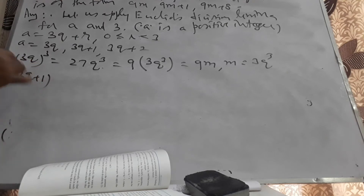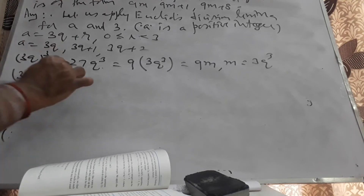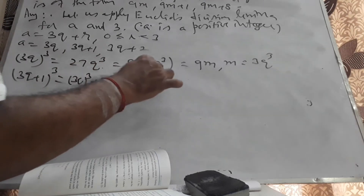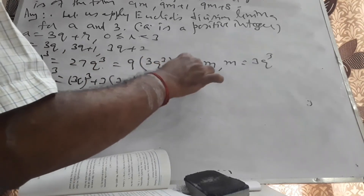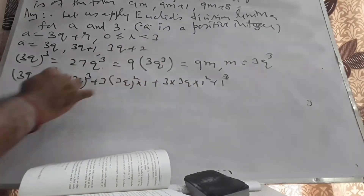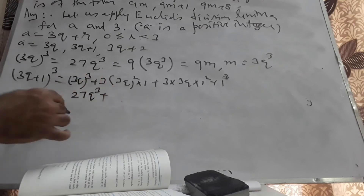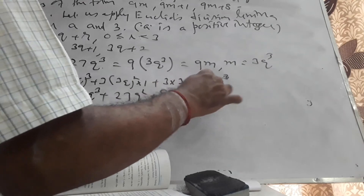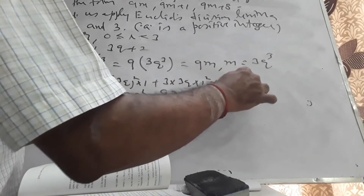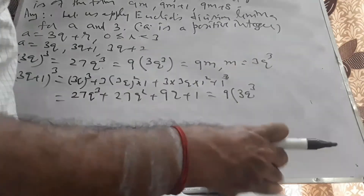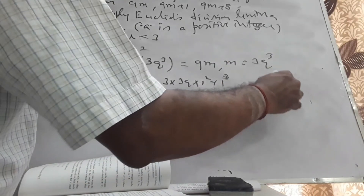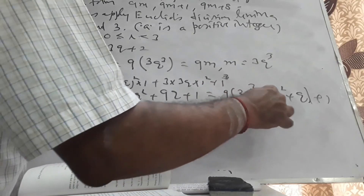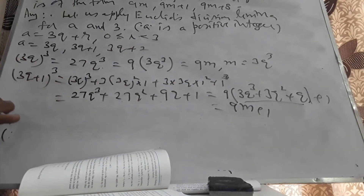(3Q+1)³: apply (a+b)³ expansion — equals 27Q³ + 3×(9Q²)×1 + 3×(3Q)×1² + 1³, which equals 27Q³+27Q²+9Q+1, which is 9(3Q³+3Q²+Q)+1, which is of the form 9m+1, where the whole bracketed quantity can be replaced by m.